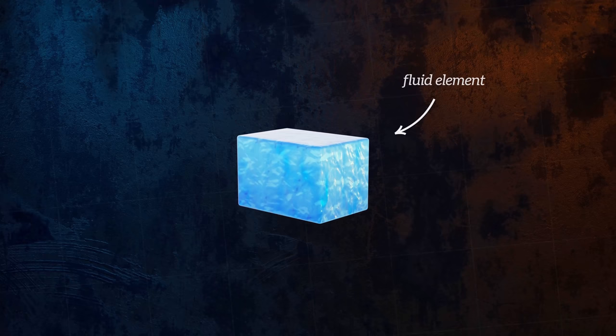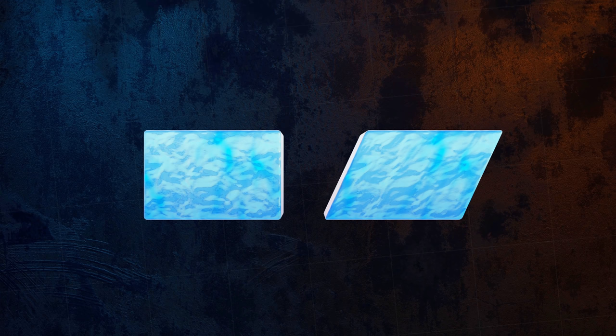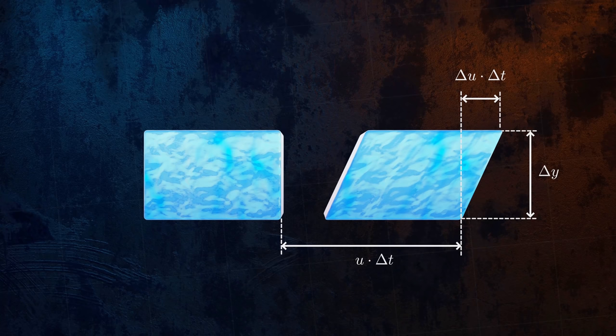Let's look at how a small fluid element like this one will deform as it flows. If du over dy is positive, the upper surface will move faster than the lower surface, and so over a time period, delta t, the upper surface will travel further by a distance equal to delta u times delta t.